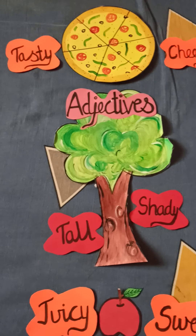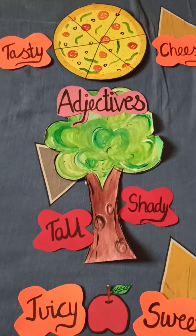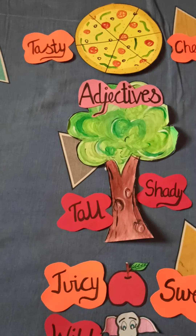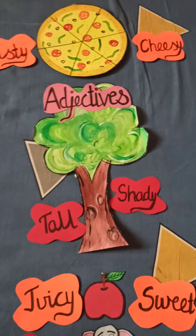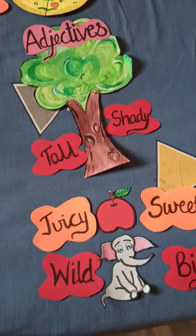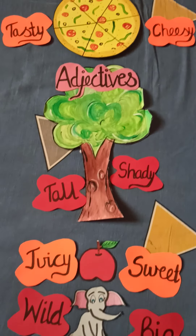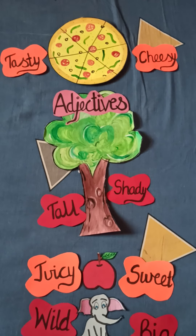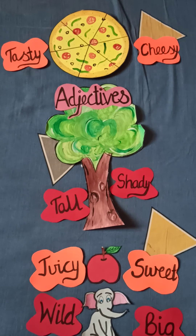Adjectives tell the quality of a noun. The words like tasty, cheesy, tall, shady, juicy, sweet, wild, and big — all these words describe a noun and they are called adjectives. So today's topic is adjectives.